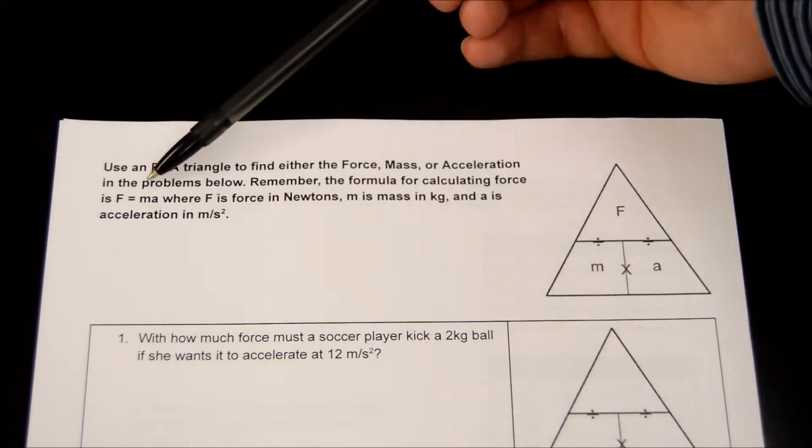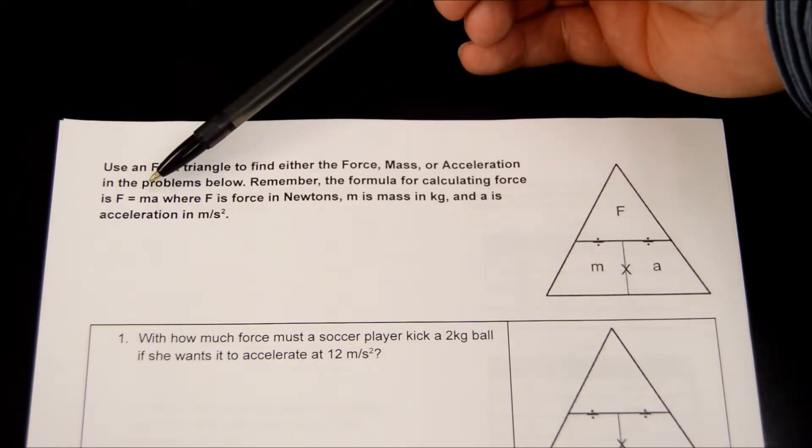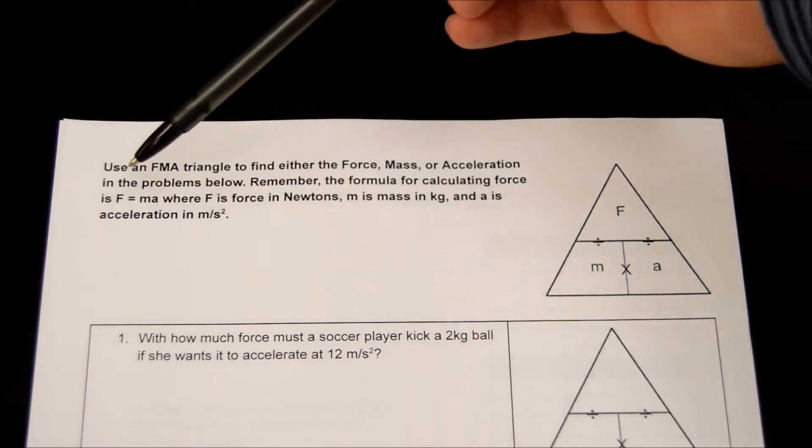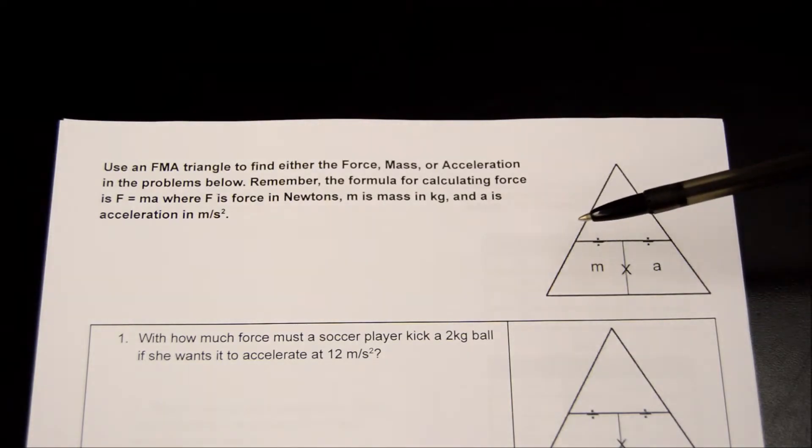This formula, force equals mass times acceleration, will be on your star chart, but your triangle won't be. So remember how the triangle works, and then when you see the formula on the star chart, you can draw the triangle right next to it.